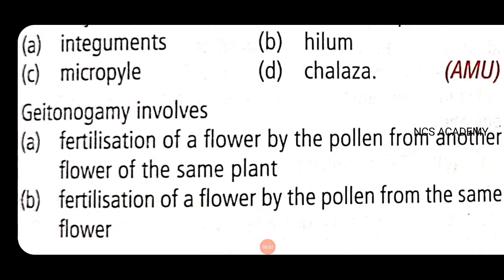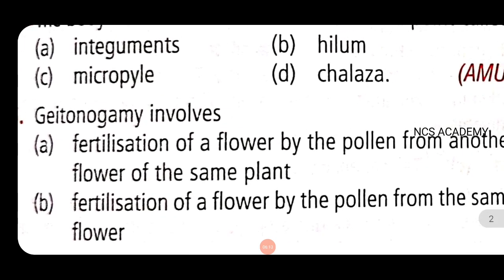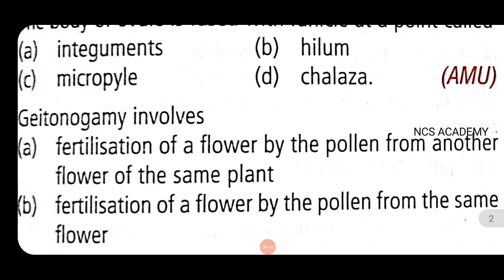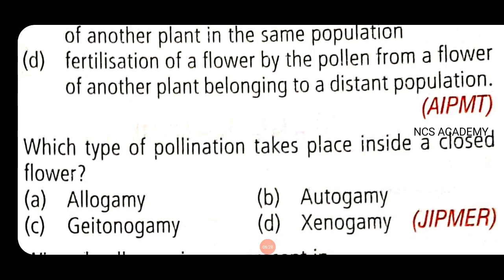Next, an AIPMU exam question: geitonogamy involves fertilization of flowers by pollen from another flower of the same plant. That is the right answer. The example of closed flowers in cleistogamy is also noted. The correct option for autogamy is autogamy, not geitonogamy.